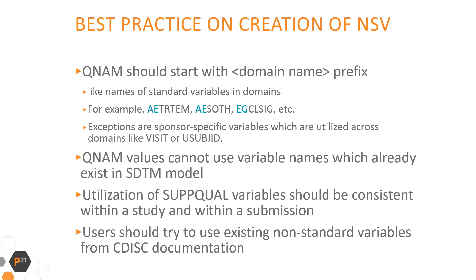There is a non-official best practice for creation of new study-specific SUPPQUAL variables. QNAM values should start with the domain name prefix, like names of standard variables in domains. For example, AETRTFL for treatment emergent flag in adverse events. Exceptions are sponsor-specific variables utilized across domains, like visit or unique subject ID in the SDTM model. QNAM values cannot use variable names which already exist in the SDTM model. Utilization of SUPPQUAL variables should be consistent within a study and within a submission — the same type of information should be represented by the same QNAM and QLABEL. Users should also try to use existing non-standard variables from CDISC documentation.